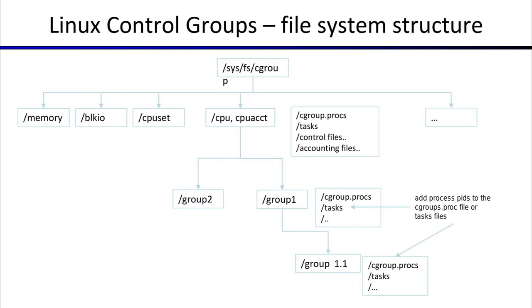How are control groups enabled? Control groups use the file system, which is the way most Linux management happens. Control groups use a cgroupFS file system that gets mounted at /sys/fs/cgroup, and that is where the files that need to be managed get loaded. Let's look at the directory structure view of that mount point.